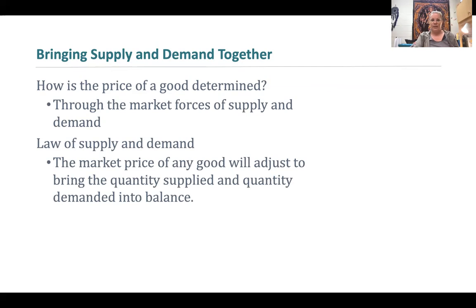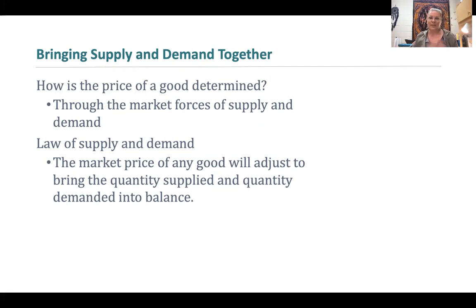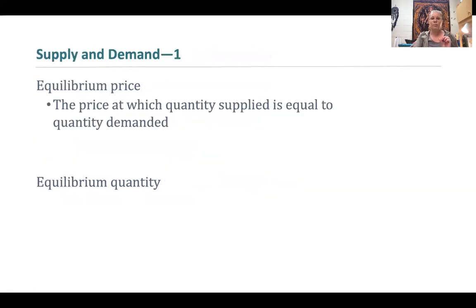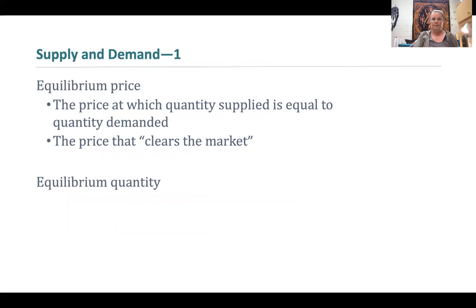The law of supply and the law of demand help adjust the price to bring quantity supplied and quantity demanded back into balance. The ideal situation — equilibrium — is where quantity supplied is exactly equal to quantity demanded. This is a win-win: the amount of stuff produced all gets bought, and the amount people want is always available. The equilibrium price is the price that clears the market, meaning there's no surplus and no shortage. The equilibrium quantity is the quantity at which quantity demanded and quantity supplied are equal.